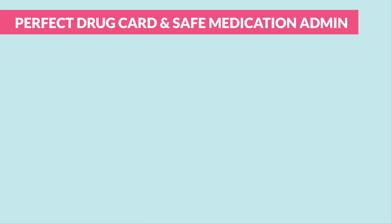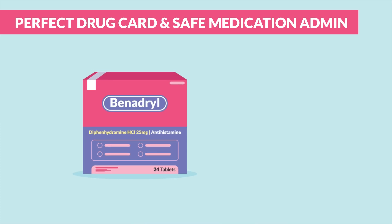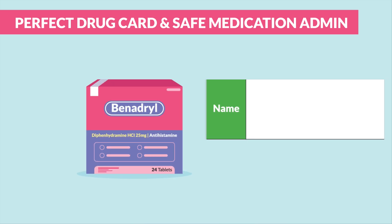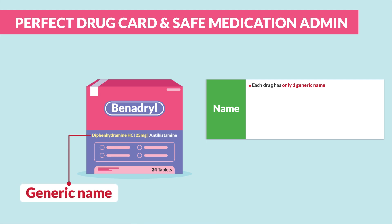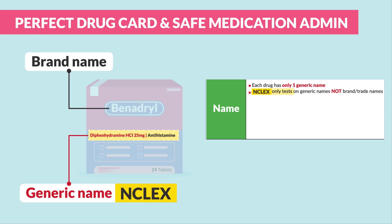The first thing you should have on your drug card is the name of the drug. It sounds simple enough, but each drug has only one generic name, but may also have multiple brand or trade names. The big key point is that the NCLEX only tests on generic names, not brand or trade names.